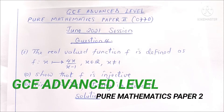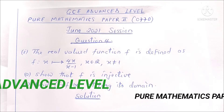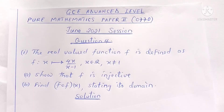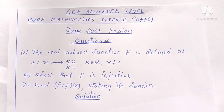The first part of the question reads: the real-valued function f is defined as f such that x is mapped onto 4x divided by x minus 1, where x is a real number different from 1.